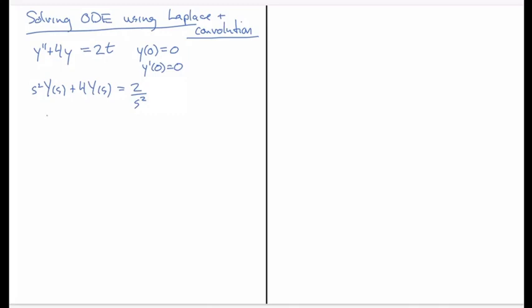Solving this for y of s we get 2 over s. Actually, I'm going to rewrite that slightly. I'll move the 2 over and write this as 1 over s squared times, with the 2 here, divided by s squared plus 4. You can see why I've done that, this is the product of transforms that we had in the previous video.